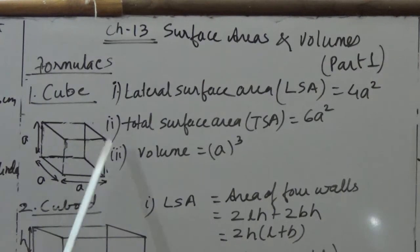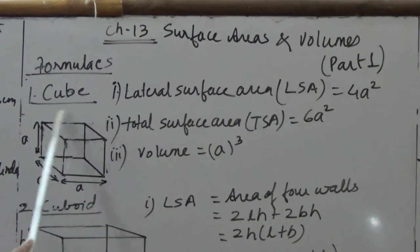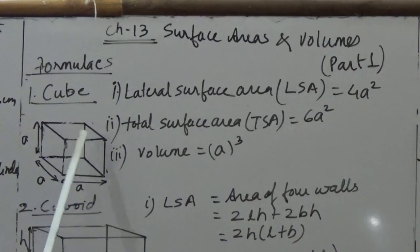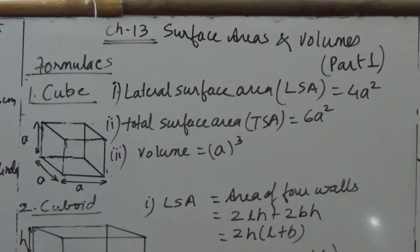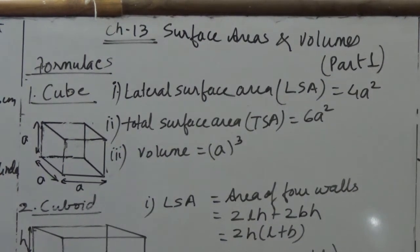The total surface area gives the area of all the faces. There are 6 faces in total, and the area of one face is A², so 6 faces give us 6A². The total surface area of a cube is 6A². The volume of a cube is A³, that is, side cubed.